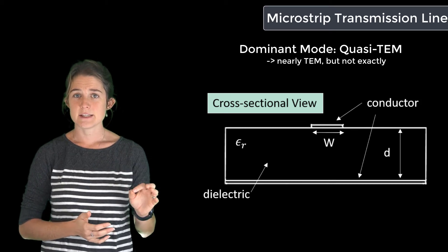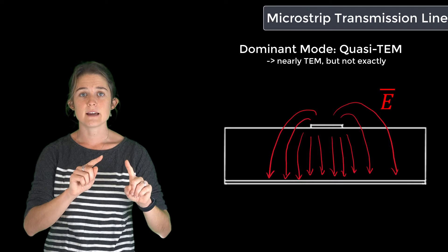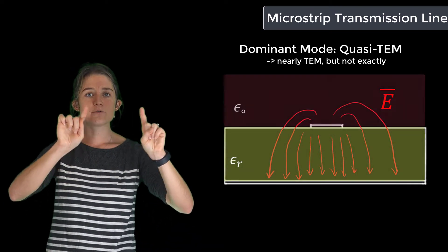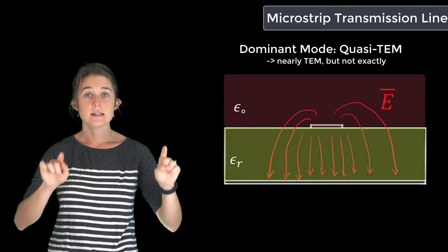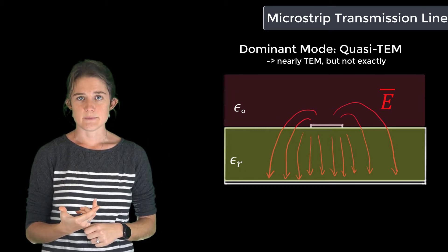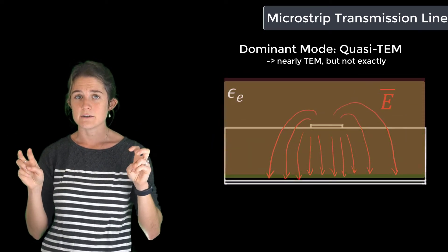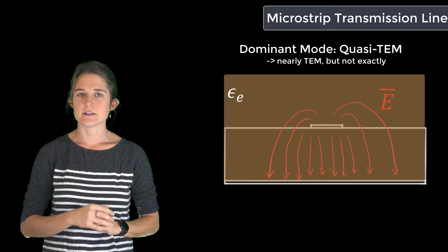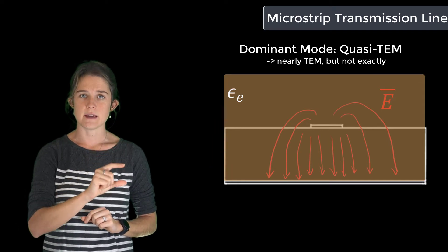The thing that prevents it from being a TEM wave is that the electric field, though mostly contained in the dielectric, also fringes up above the dielectric into the free space region. So we call it quasi-TEM, and we calculate an effective relative permittivity to take into account the fact that part of the fields see free space rather than the actual dielectric.